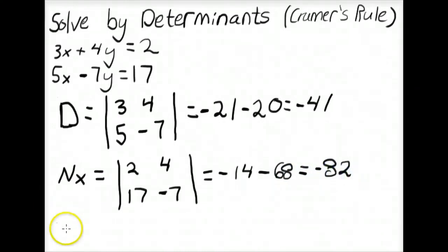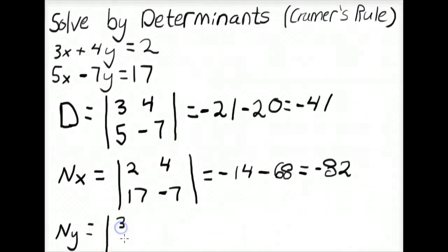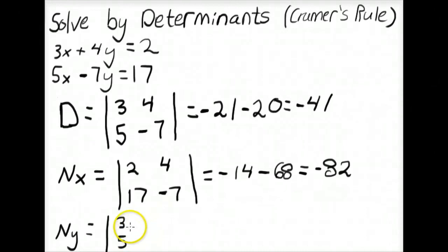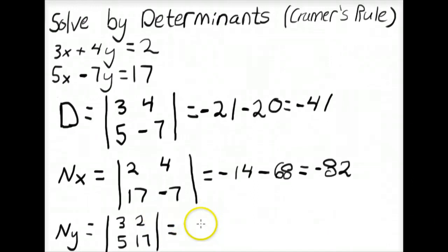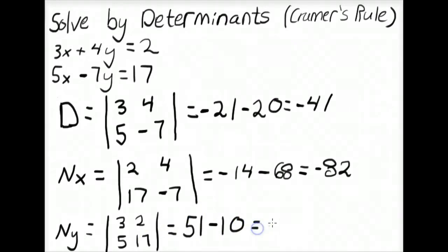The numerator of the Y term uses the denominator determinant but replaces the Y coefficients 4 and negative 7 with C and F, which are 2 and 17, keeping 3 and 5 the same. Expanding: 3 times 17 equals 51, minus 2 times 5 which equals 10. So the numerator of Y equals 41.